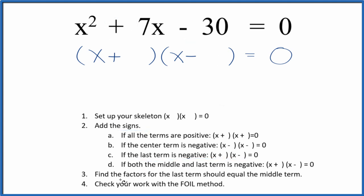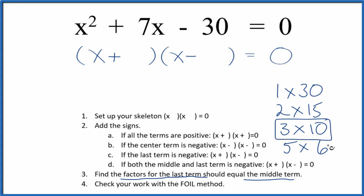Next, we want to find the factors for the last term, negative 30, and they should add up to that middle term, 7. If I list the factors for 30, I can see the difference between 3 and 10 is 7.